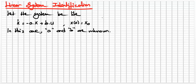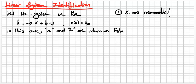First, we need to know that the states x are measurable. The whole states are observable, and in a simple way we should be able to measure the x value. In this case, we can define an estimator model.